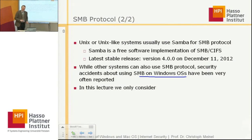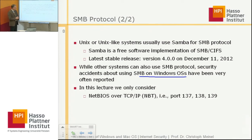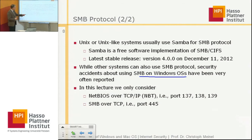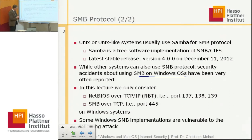I will introduce only a few examples of attacks that are based on misusing the SMB protocol. I concentrate on NetBIOS over TCP/IP — NBT — with ports 137 to 139, and SMB over TCP with port 445. I mentioned there are other constellations possible, but in the following I fix this constellation to introduce some attacks.